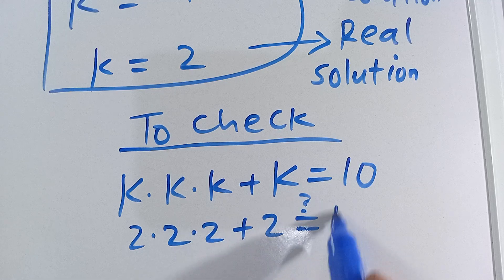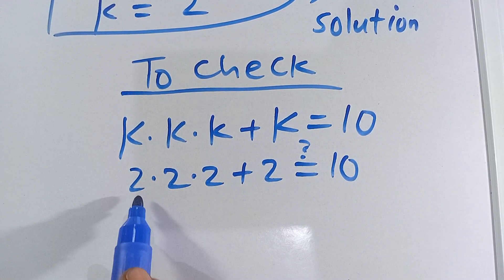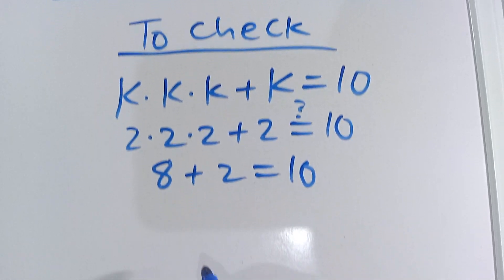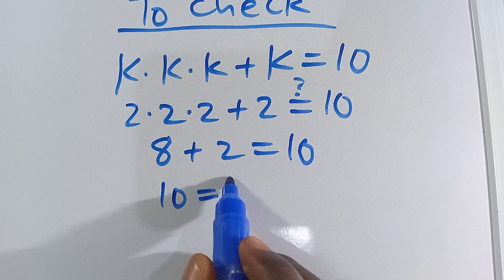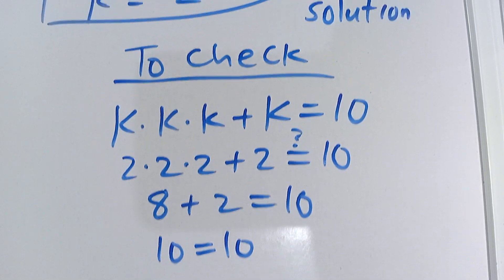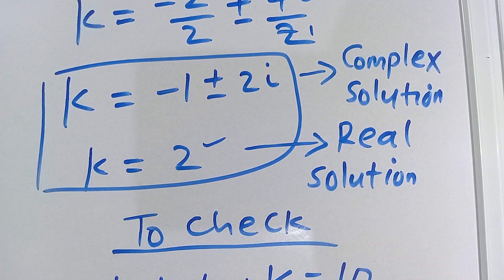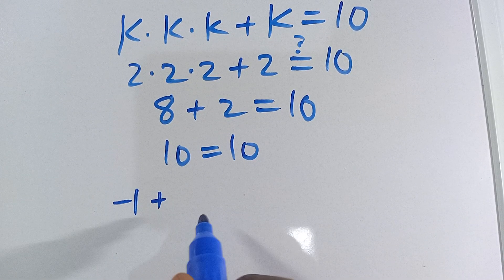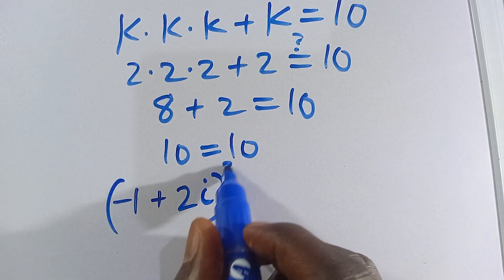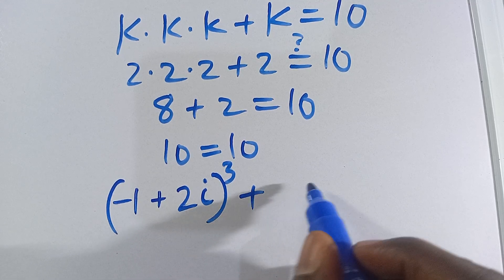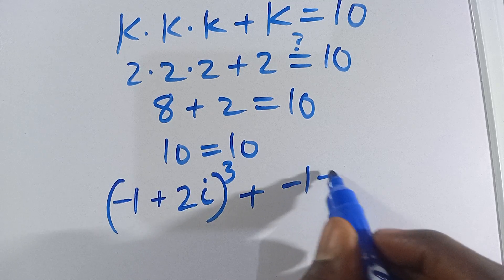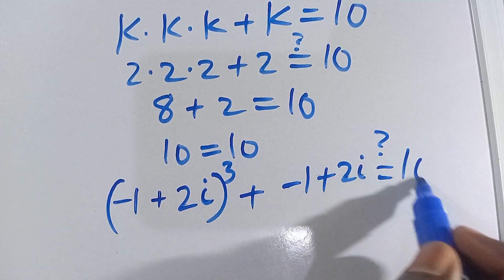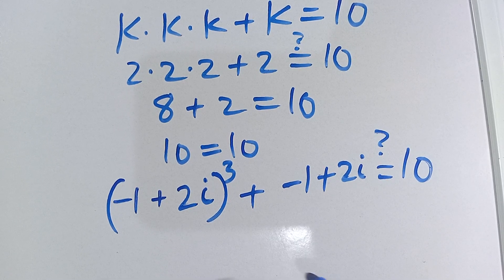Let's verify. For k equals 2: 2 times 2 times 2 gives us 8, plus 2 equals 10. So 8 plus 2 equals 10, which is correct. Now let's check the complex solution: for k equals negative 1 plus 2i, we compute k³ plus k and confirm it also gives us 10.